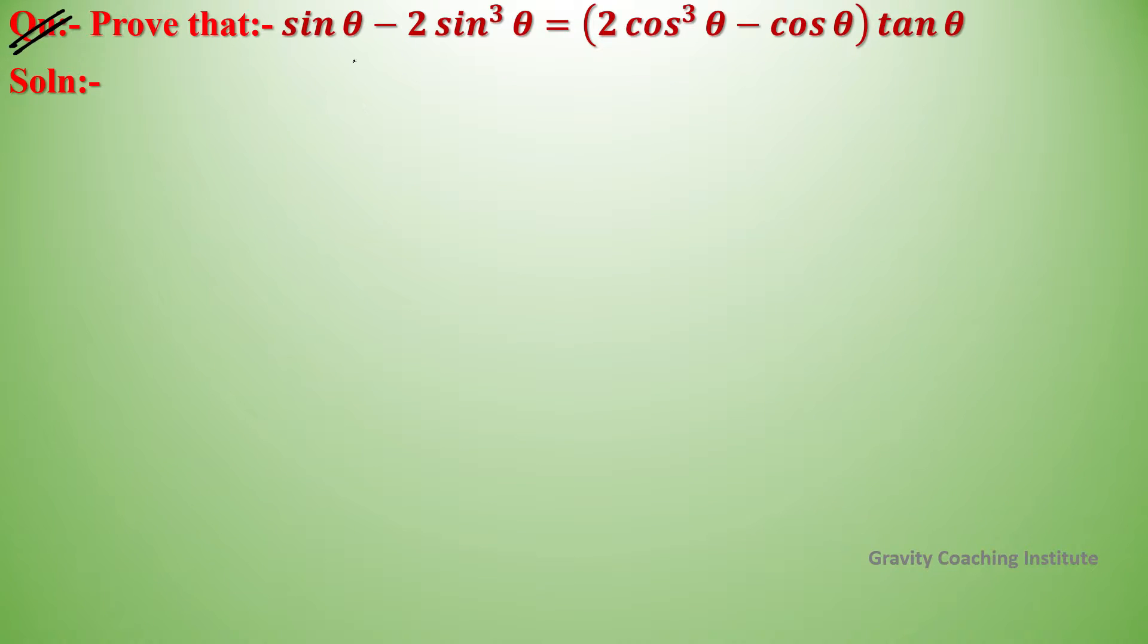The question is to prove that sin theta minus 2 sin cube theta equals 2 cos cube theta minus cos theta tan theta. The LHS is sin theta minus 2 sin cube theta, and the common factor in both terms is sin theta.